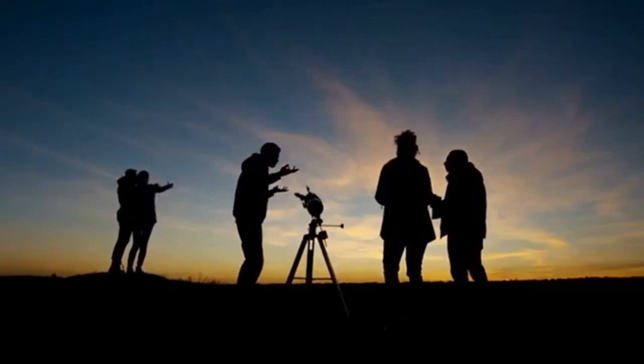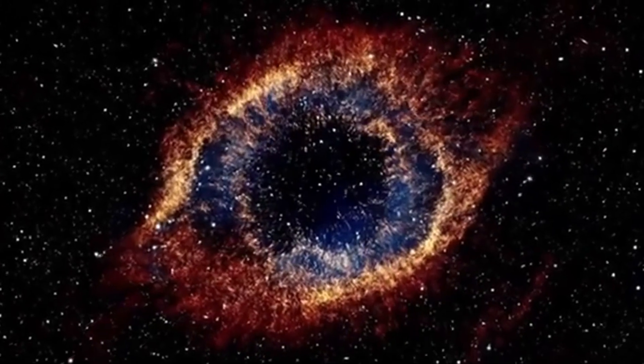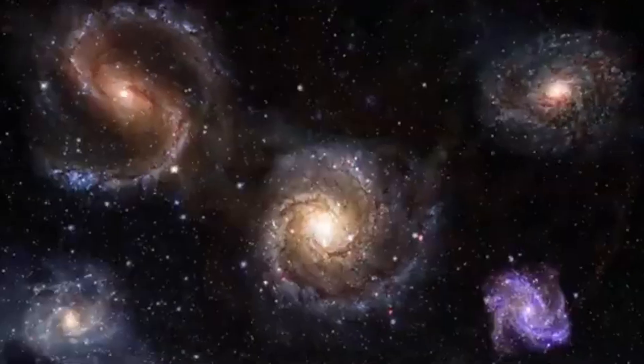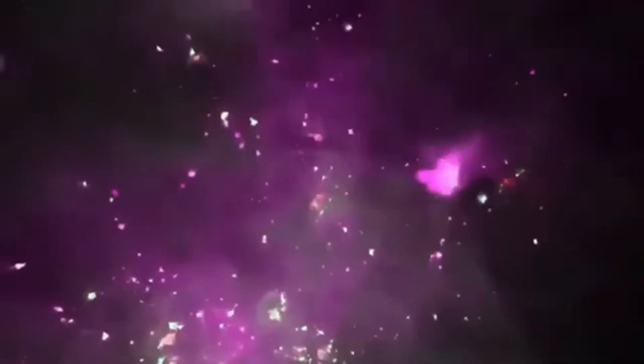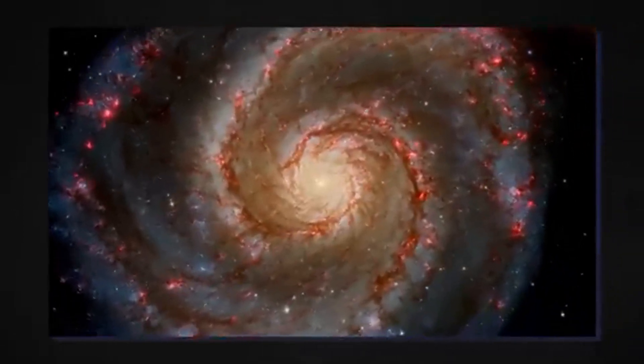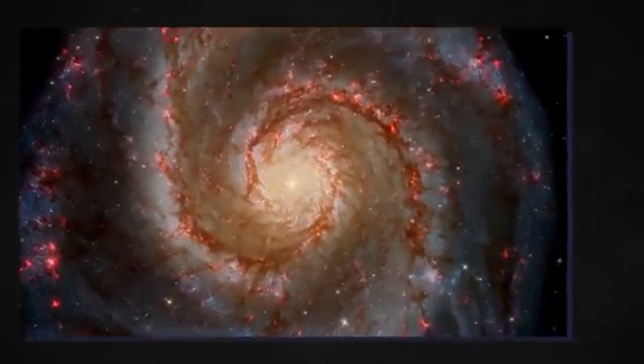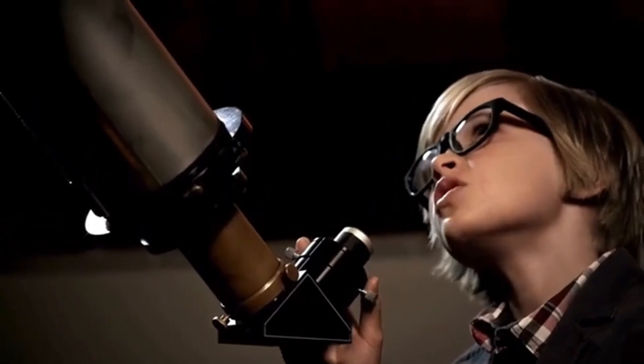Despite the potential risks, the collision of Andromeda and the Milky Way is not an immediate concern. The event is projected to occur in about 4-5 billion years, giving humanity ample time to prepare and possibly find solutions to mitigate the impact. Additionally, by that time, the Sun will have evolved into a red giant, potentially engulfing the inner planets, including Earth. This eventuality underscores the transient nature of celestial bodies and the ongoing evolution of the cosmos.